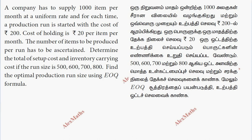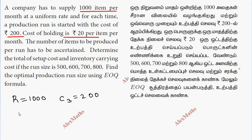Hi students, this is Alex here. In the product level, the company has to supply 1000 items per month. Production run is started with a cost of 200. Cost of holding is 20 per item per month.